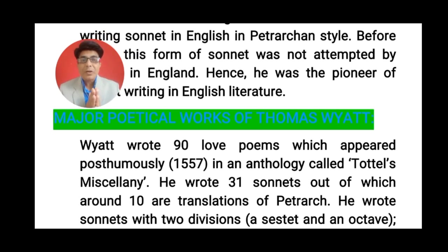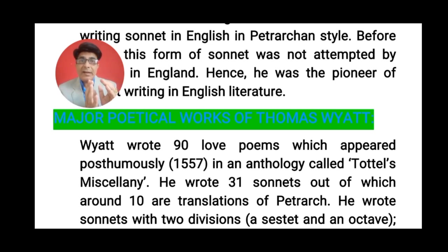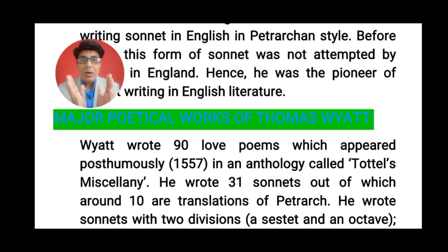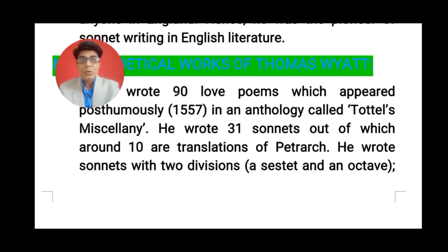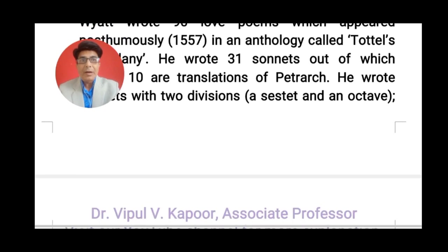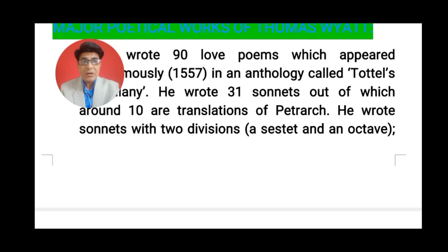What are the major poetical works of Thomas Wyatt? Thomas Wyatt, throughout his lifetime, wrote about 90 poems, out of which 31 are sonnets. Out of these 31 sonnets, 10 he actually translated from Petrarch's Italian sonnets. All his 90 poems were posthumously published — posthumously meaning after his death. These poems were published in 1557 in an anthology entitled Tottel's Miscellany, where we come across his poems and sonnets.